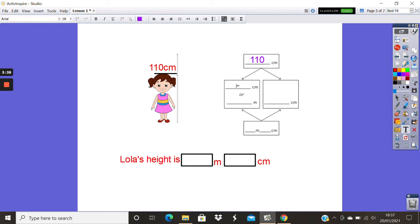And then here we're going to partition it. So we've got 100 centimeters, which would be the same as 1 meter. And then here we've got 10 centimeters left. So we've got our 10 centimeters here. And then because 100 centimeters is the same as 1 meter, that would become 1 meter and 10 centimeters. So Lola's height is 1 meter and 10 centimeters.